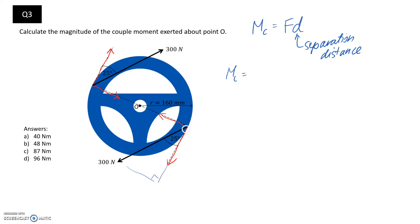If we draw ourselves a triangle, we want this length, so it's going to be 300 cos 25 to get the force along here.